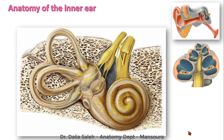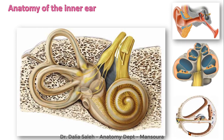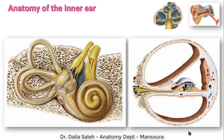If we take a section through the cochlea, it is made of an axis of bone called the modiolus around which the cochlea rotates. In each turn, the cochlea is divided into three compartments: the scala vestibuli, scala tympani, and in the middle, the scala media. The scala vestibuli is separated from the scala media by the vestibular membrane, and the scala tympani is separated from the scala media by the basilar membrane. Both scala vestibuli and scala tympani contain perilymph, while the scala media contains the cochlear duct, the organ of Corti, and is filled with endolymph.